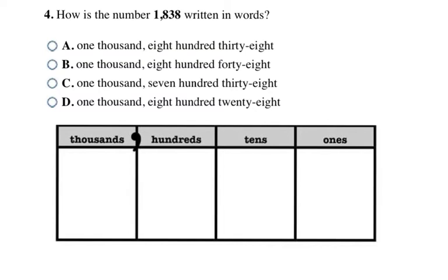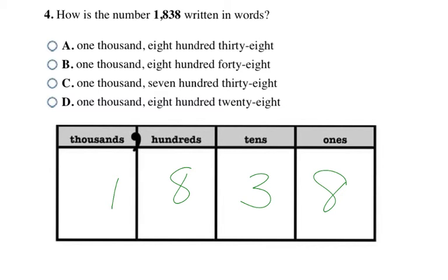Now this problem has me do it the opposite way — I have the standard number and need to write it in words. I'll fill the number into the chart to help me read it, starting with the ones column and working to the left. When reading a number, the thousands and hundreds places are read with their place value after them, and then the tens and ones are said like you normally would. So this would be one thousand, eight hundred, thirty-eight — choice A, which is my final answer.